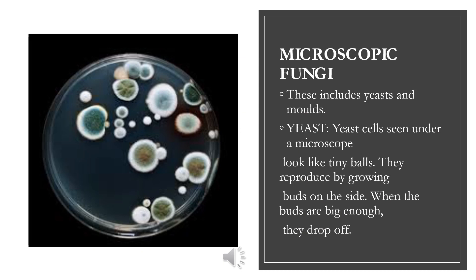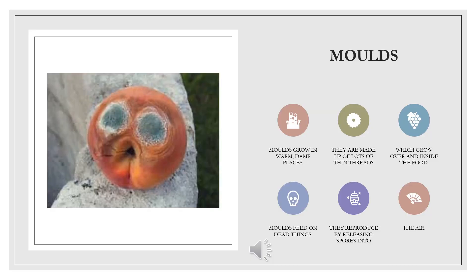Yeast: yeast cells seen under a microscope look like tiny balls. They reproduce by growing buds on the side; when the buds are big enough, they drop off. Molds: molds grow in warm, damp places. They are made up of lots of thin threads which grow over and inside the food. Molds feed on dead things and reproduce by releasing spores into the air.